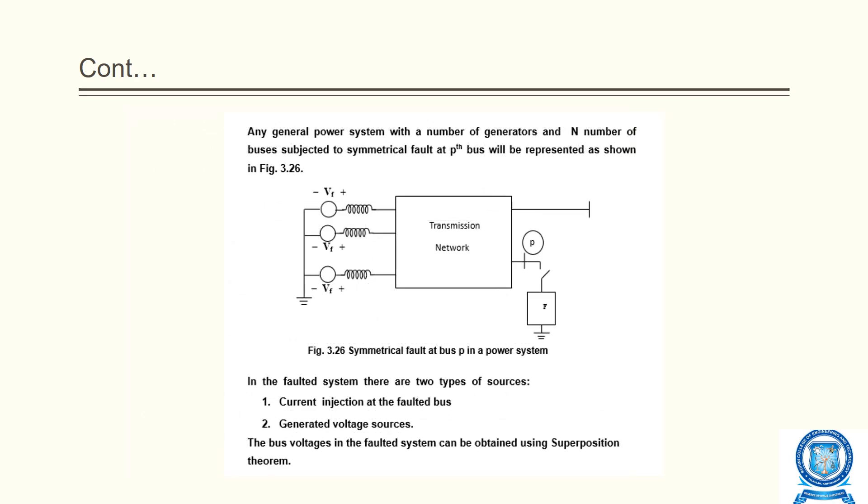A general power system with N number of buses subjected to a symmetrical fault at bus P is represented as shown. In the faulted system, there are two types of sources: current injected at the faulted bus and the generated voltage sources. The bus voltages in the faulted system can be obtained using the superposition theorem.